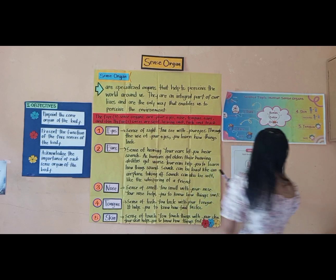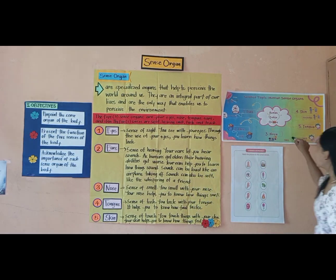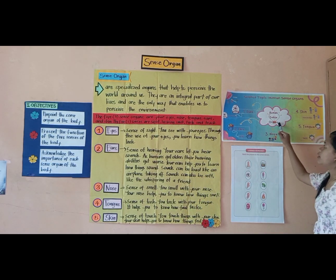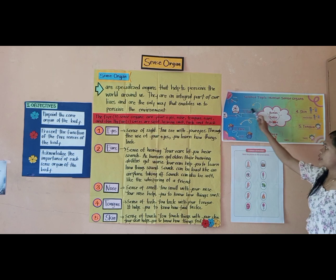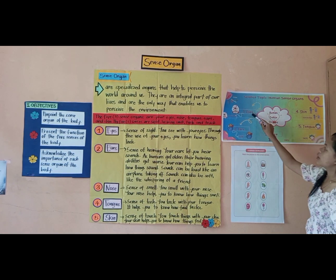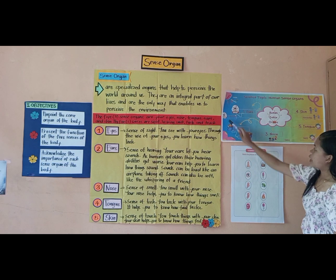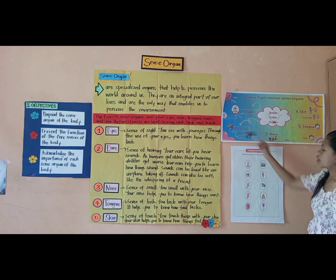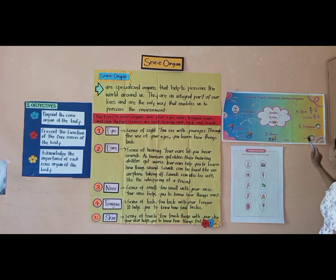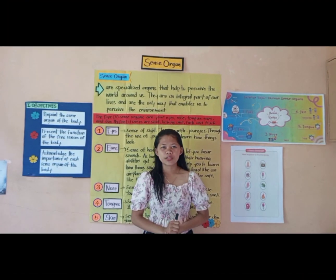So, this is the concept of the human sense organs. And those are: eyes, ears, nose, skin, and tongue. Eyes are for sight. Ears are for hearing. Nose is for smell. Skin is for touch. And tongue is for taste.